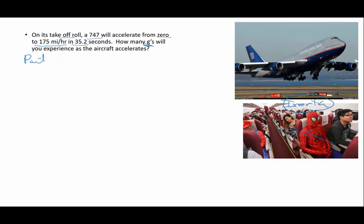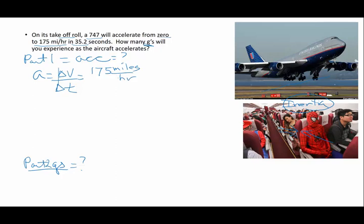So, let's do this first. To find acceleration, acceleration is change in velocity divided by change in time. So, my change in velocity is, it goes from zero up to 175 miles per hour. So, that's my change in velocity. And, the time is going to be 35.2 seconds.